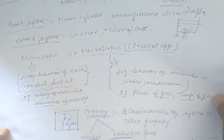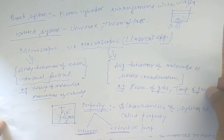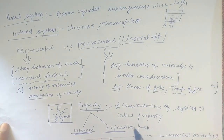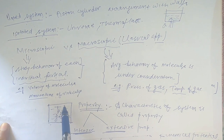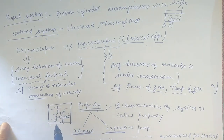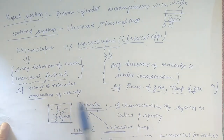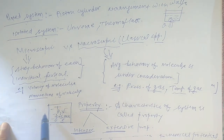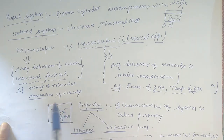Now let's discuss properties. Properties are basically characteristics of the system. For example, if gas is filled inside the system, it has some temperature, some pressure, some mass, some density — these are the properties. Just like in mechanics, a block has displacement, velocity, and acceleration; similarly, in thermodynamics, a system has pressure, temperature, and volume.